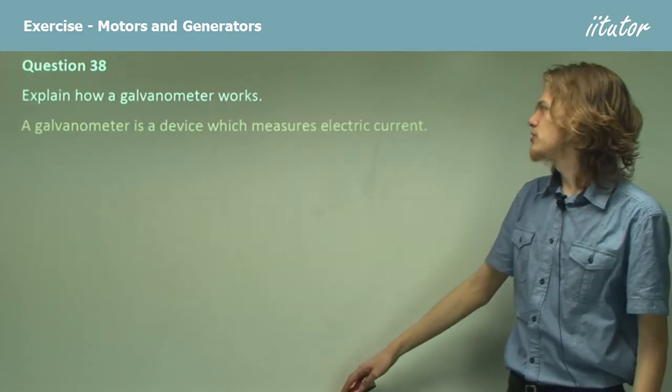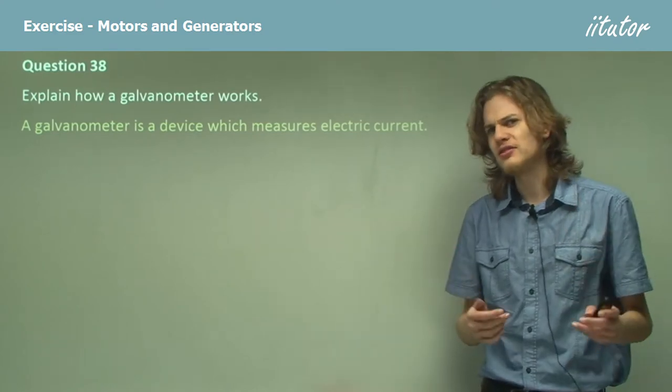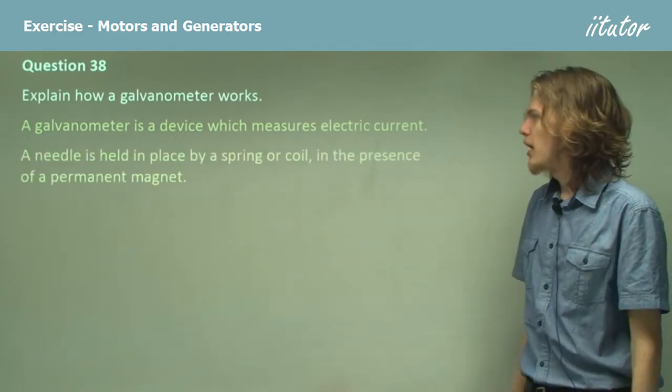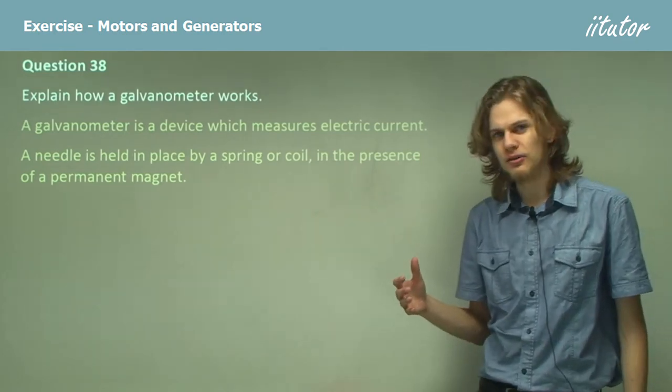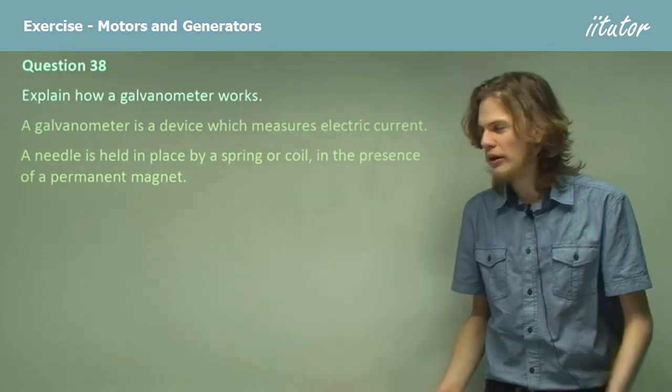A galvanometer is a device which measures electric current. Best to start with the basics. A needle is held in place by a spring or coil in the presence of a permanent magnet, which we can measure the strength of quite easily.